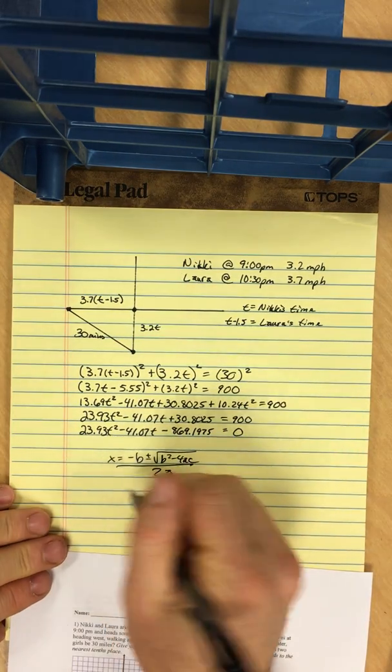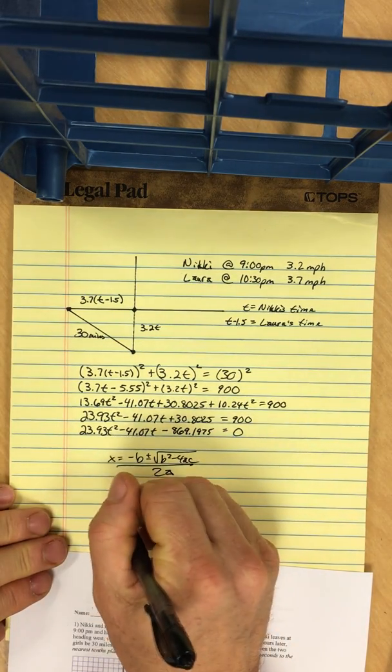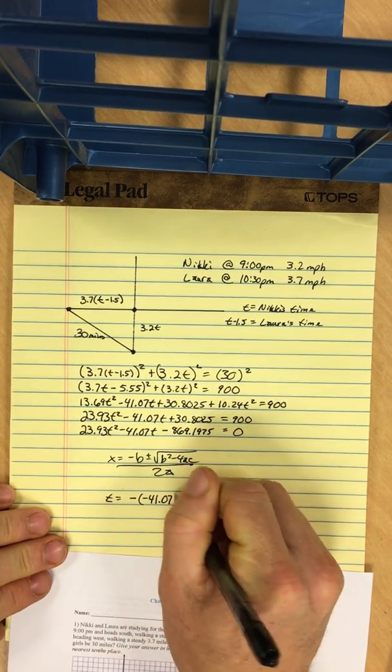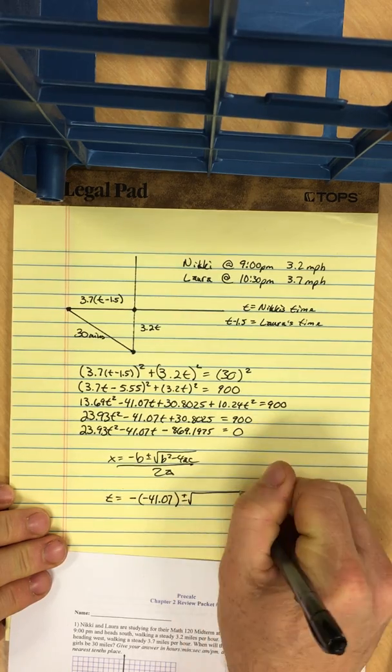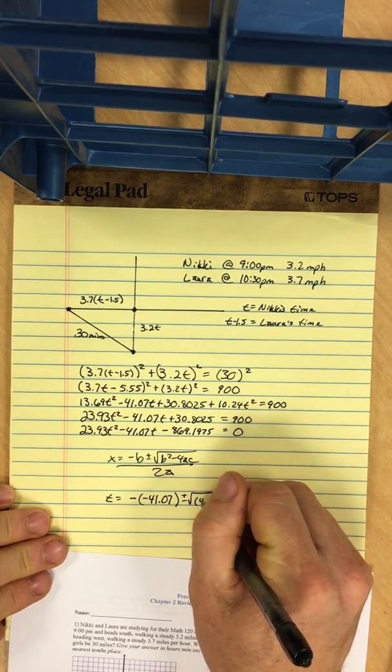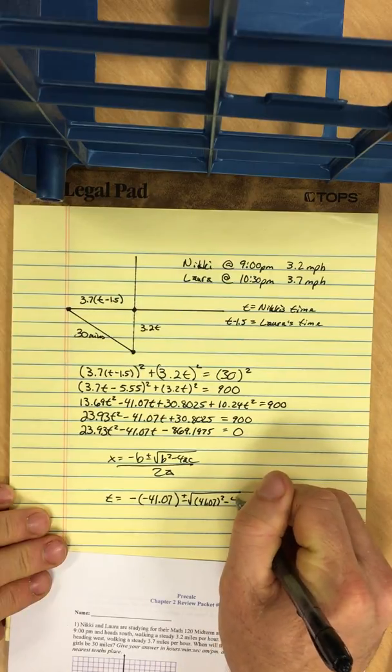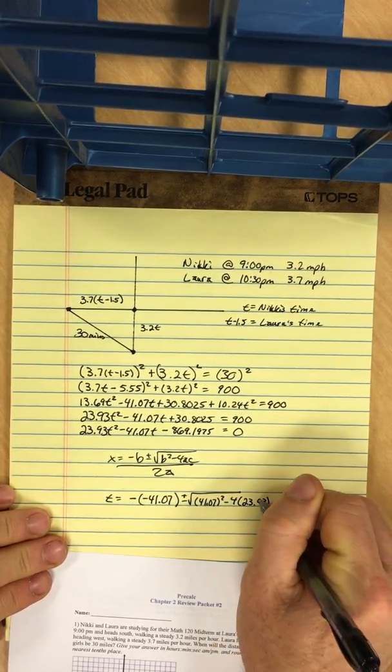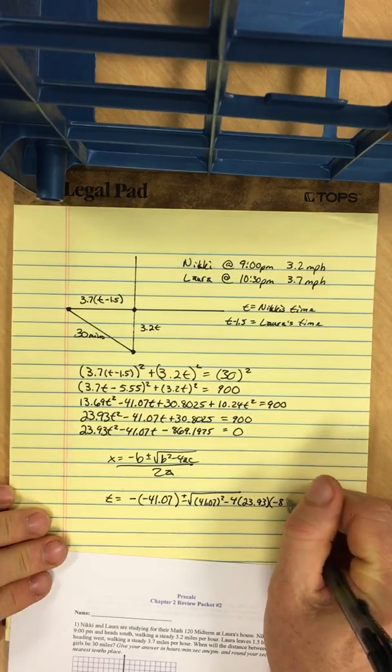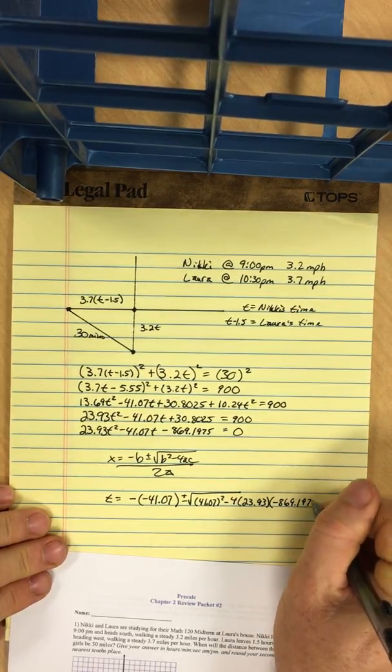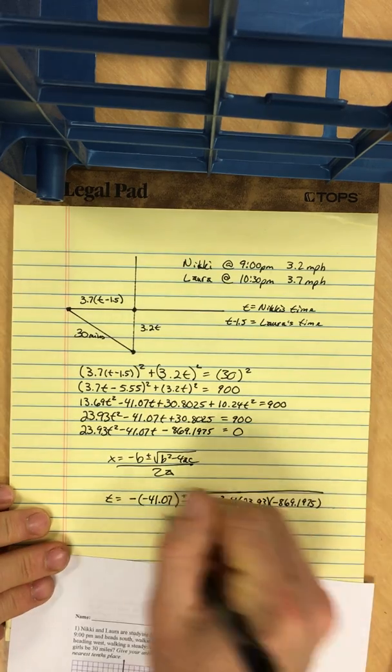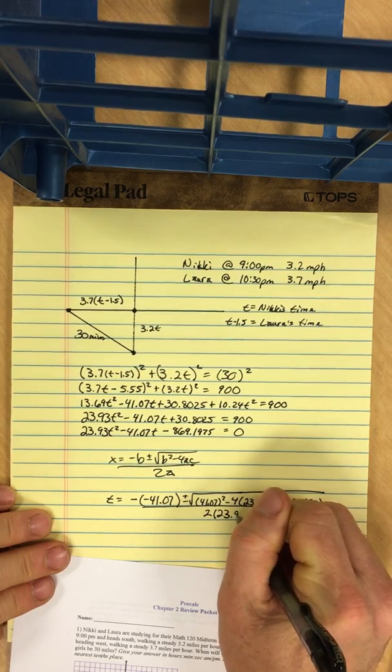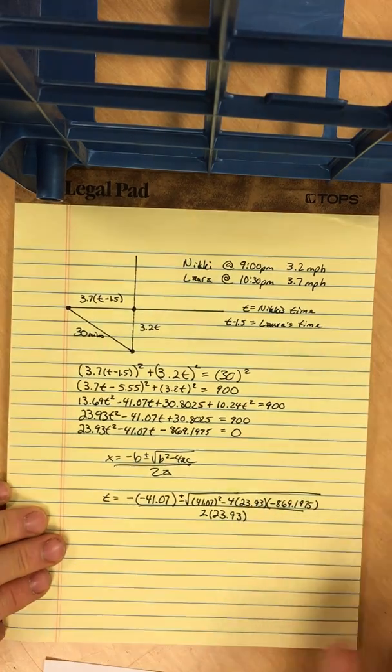23.93t squared minus 41.07t. And I need to take that 30.8025 and subtract 900. I get negative 869.1975. The quadratic formula is x equals negative b plus or minus b squared minus 4ac divided by 2a. So let's do it. So I'm gonna put t equals negative b. So negative, negative 41.07, plus or minus the square root of b squared.